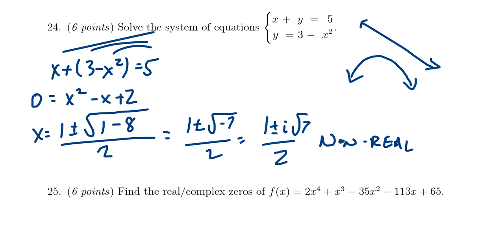because x turned out to be a non-real value, it's actually suggesting to us that these two graphs, the line and the parabola, actually have no intersection, which is what the system of equations is trying to find. That's the solution there.